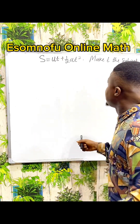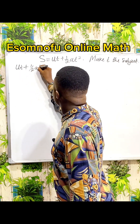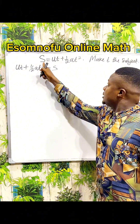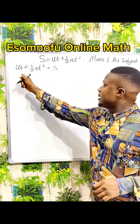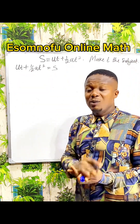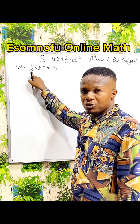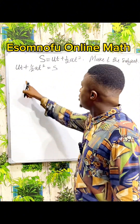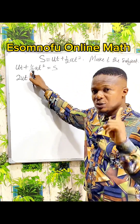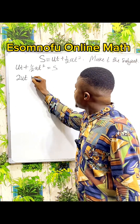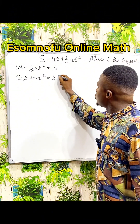To make T the subject, I can rearrange and write: UT plus one-half aT squared equals S. Left is equal to right, so right is equal to left. My T is on the left here. Because of this fraction one-half, I can multiply everything by 2. So 2 times UT gives me 2UT. Two times one-half gives 1, so 1 times aT squared gives aT squared. And 2 times S gives 2S.